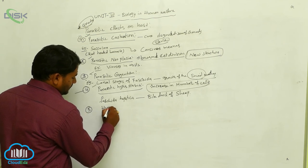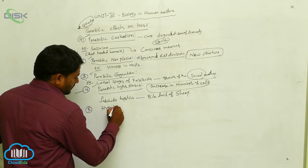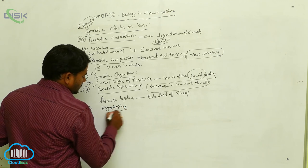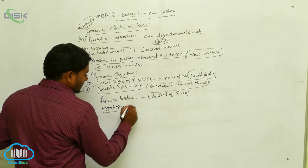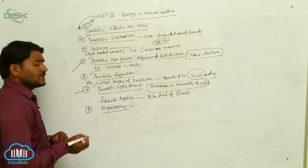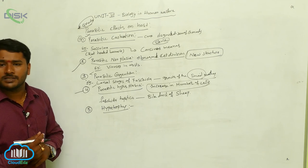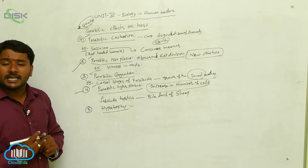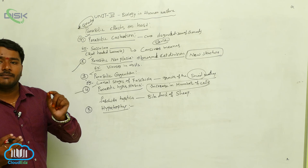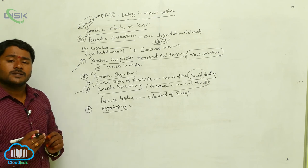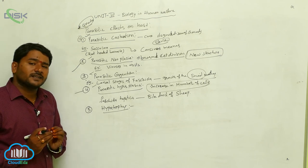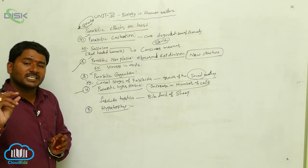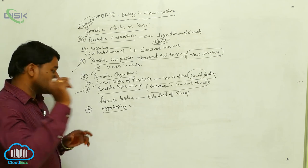The next type is hypertrophy. Some parasitic infections cause an abnormal increase in the size of a cell.